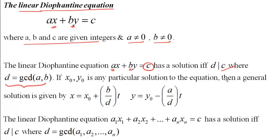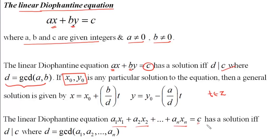Now suppose this equation is solvable, that is when d divides c. In that case we will somehow find a particular solution x0 and y0, and then we can find a general solution by writing x as x0 plus b upon d into t, and y equals y0 minus a upon d into t, where t is an integral parameter. For a general linear Diophantine equation a1·x1 + a2·x2 + ... + an·xn = c, again we check solvability by finding GCD of all coefficients a1, a2, ..., an; if that GCD d divides c the equation is solvable, otherwise not.